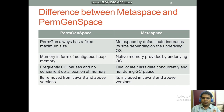Memory in PermGen is in the form of contiguous heap memory, whereas in Metaspace we have native memory provided by the underlying OS. In PermGen space there are frequent GC pauses, and concurrent deallocation of memory is not possible. In Metaspace, class data is deallocated concurrently and not during GC pauses — that is the key point. PermGen is removed from Java 8 and above; Metaspace is included in Java 8 and above.